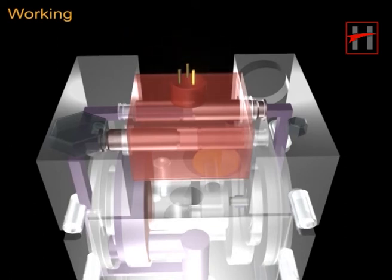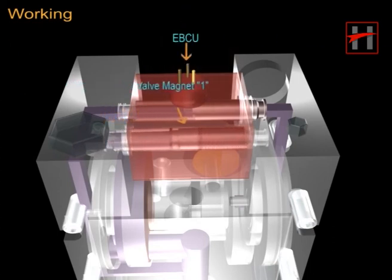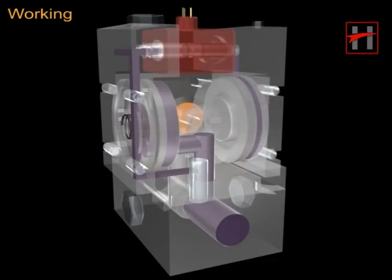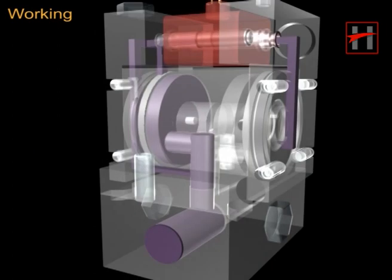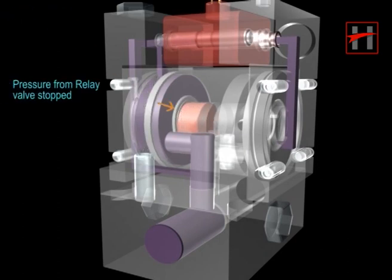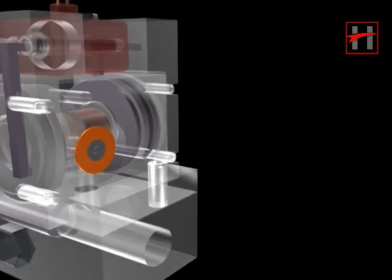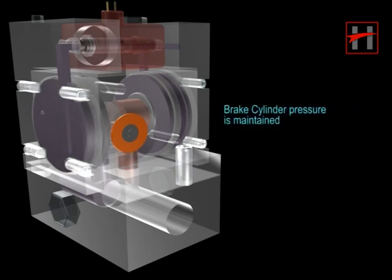Maintaining pressure: In this condition, one of the magnets is energized by the EBCU. Because of this, the pressure coming from the relay valve through port D pushes the diaphragm D to the opposite end. So the pressure from the relay valve is stopped, and the brake cylinder pressure is maintained.